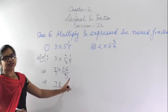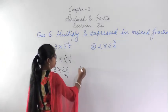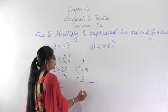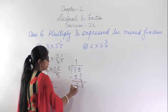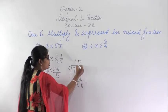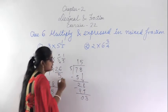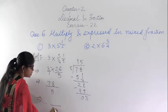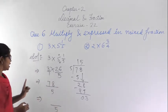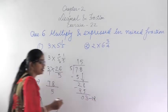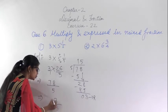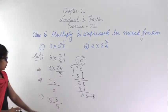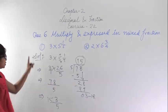Now convert 78/5 into a mixed fraction. Divide 78 by 5: 5 ones are 5, bring down 7, 5 fives are 25 — bring down 8, 5 fives are 25, remainder 3. The denominator stays as 5, the remainder 3 goes in the numerator. So the answer is 15 and 3/5. Verify: 5 times 15 is 75, plus 3 is 78 over 5.